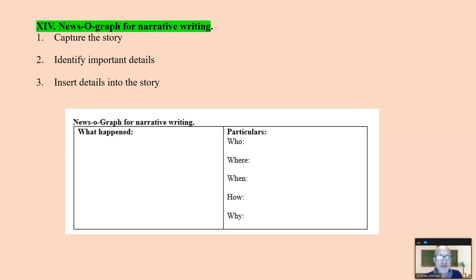News-o-graph for narrative writing. A news story describing what happens, you are narrating, you are the narrator, is a form of narrative writing. So you capture the story first to the best of your ability, just write, write, write, don't think. Then you identify the important details: who, where, when, how, why, and use that as the basis to write your news story.